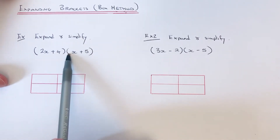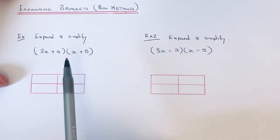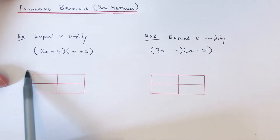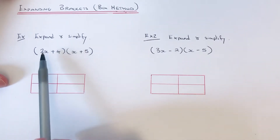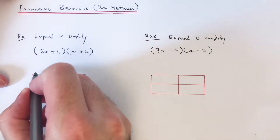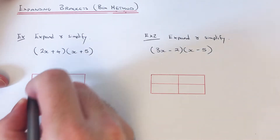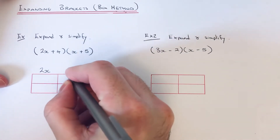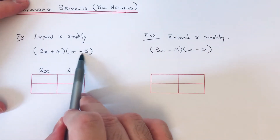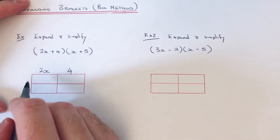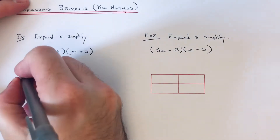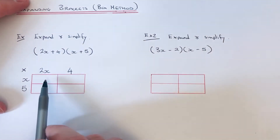First of all we're going to expand and simplify (2x + 4)(x + 5). You need to start off with four boxes, and then split the first two terms in the first bracket either along the top or down the side. So we put 2x here and 4 here, then split the two terms in the second bracket down the side.